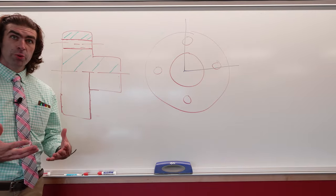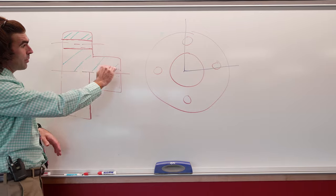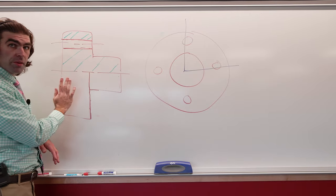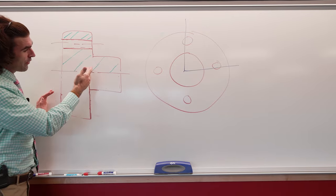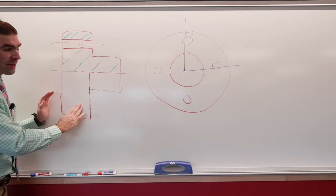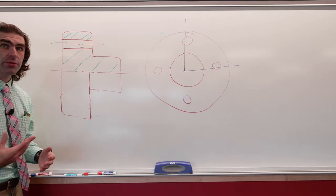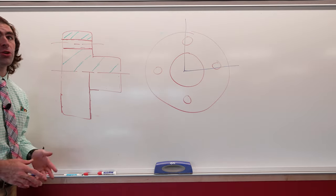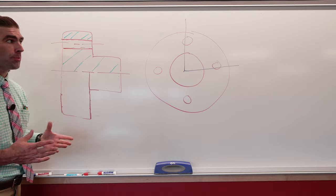On the view that's sectioned, the top half will be in section, the bottom half will not. If you notice, you've got this line here where this boss connects with the part and we're not going to use hidden lines right here. That's really just a drafter's choice. You could show hidden lines there or you could omit them.